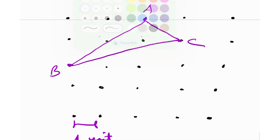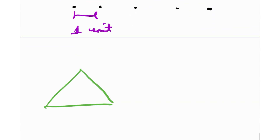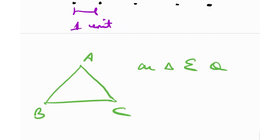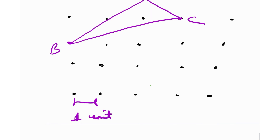Now what I want to demonstrate is that because these three vertices are lattice points, the area will be rational. So the claim I'm making is: if you have any triangle ABC such that A, B, and C are lattice points, then the area of this triangle will be rational. I'll prove this in a couple of ways.